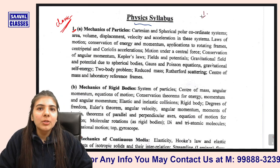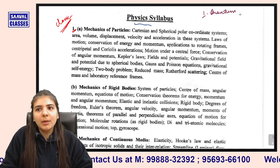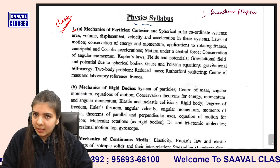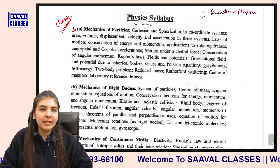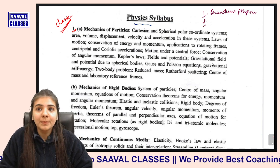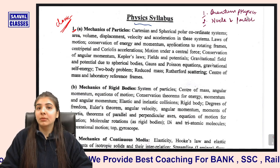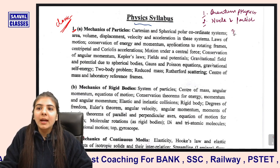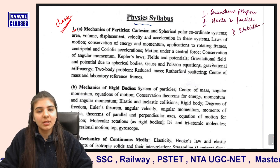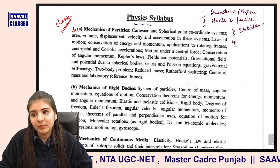The first important book is quantum physics — this is one of the most important books. In the Master's paper, there are many portions from quantum physics. The third one is statistical physics, and according to the paper, this book is also very important.